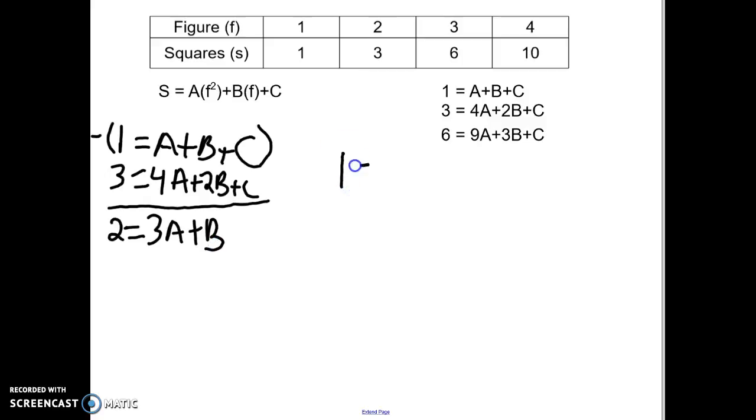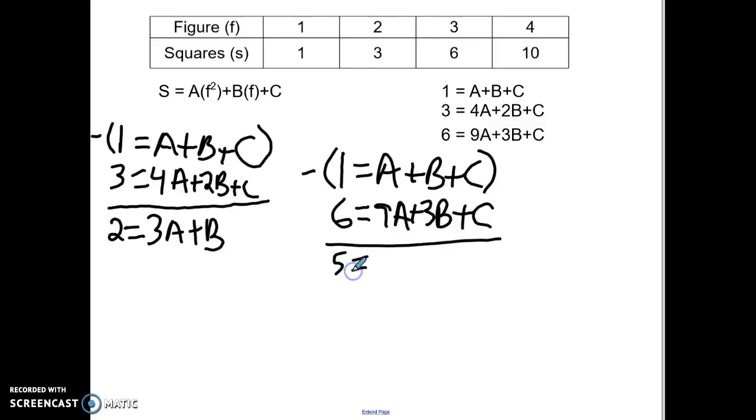So 1 equals a plus b plus c, and then 6 equals 9a plus 3b plus c. I'm going to cancel out line 1 again, so I've got 5 equals 8a plus 2b.